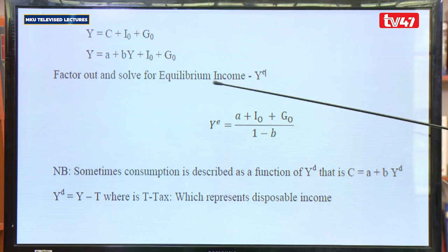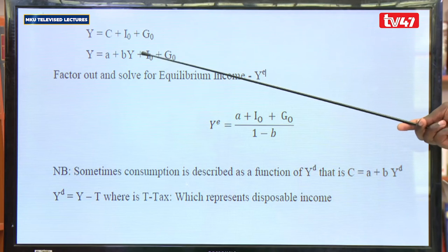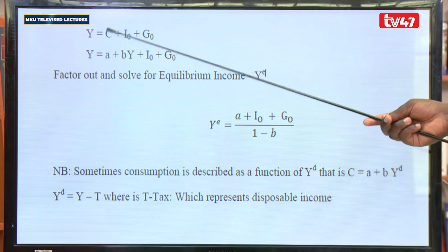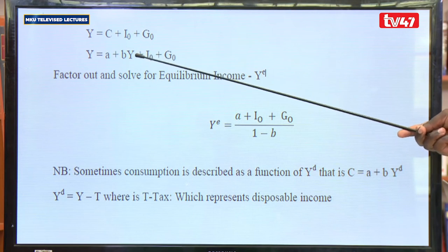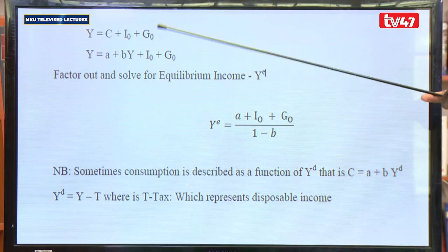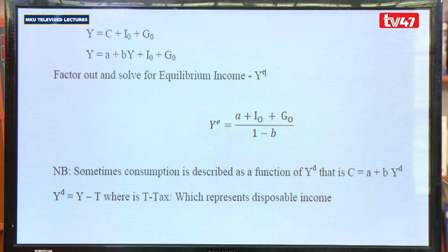By doing that, the next step is to bring like terms together. The BY term moves out, giving us Y minus BY equals A plus I plus G. We then have a new equation in this form, dividing both sides by 1 minus B. Consumption is described as a function of disposable income Yd, where Yd equals Y minus T. We have taxes, here considering taxes on personal income.